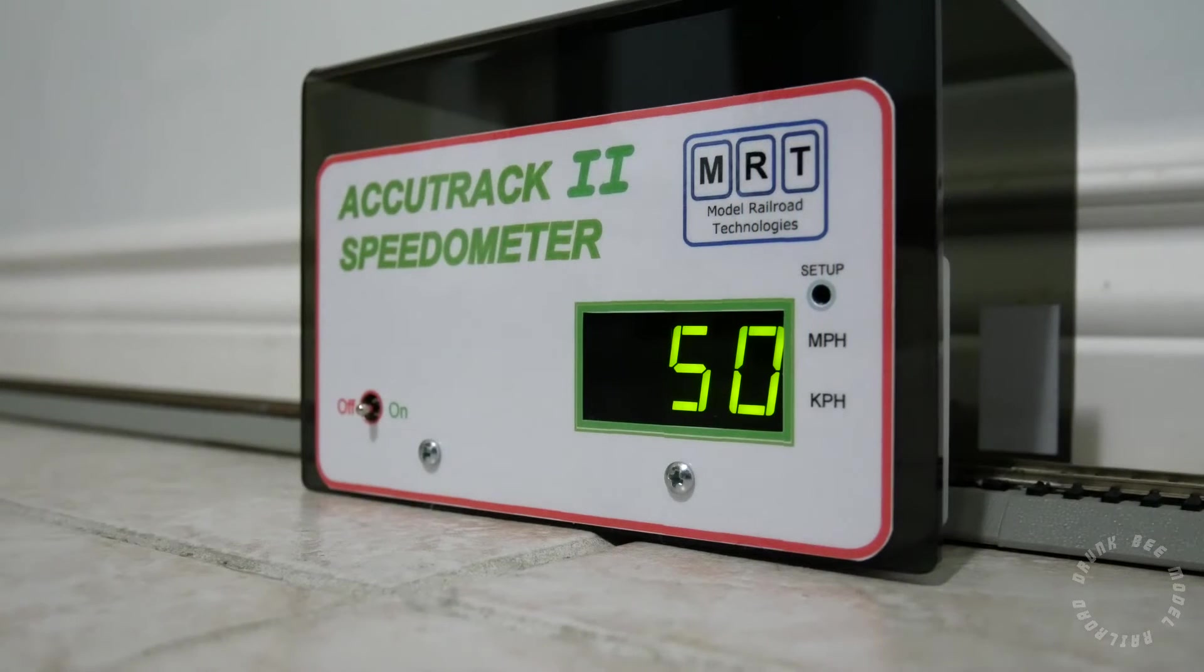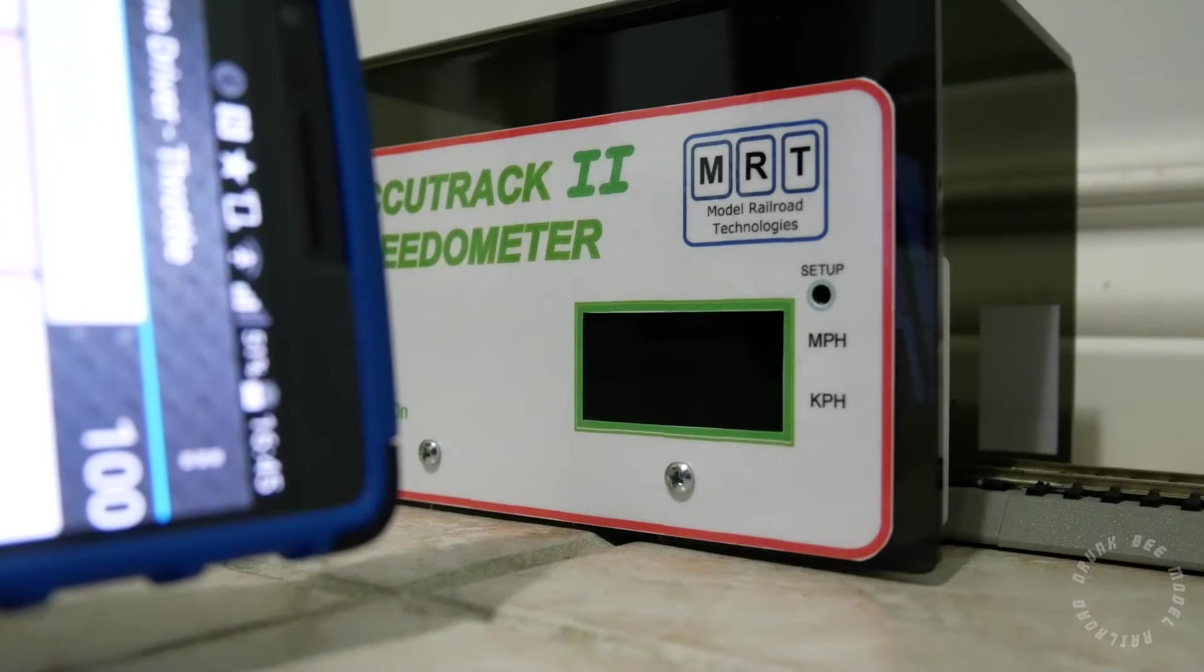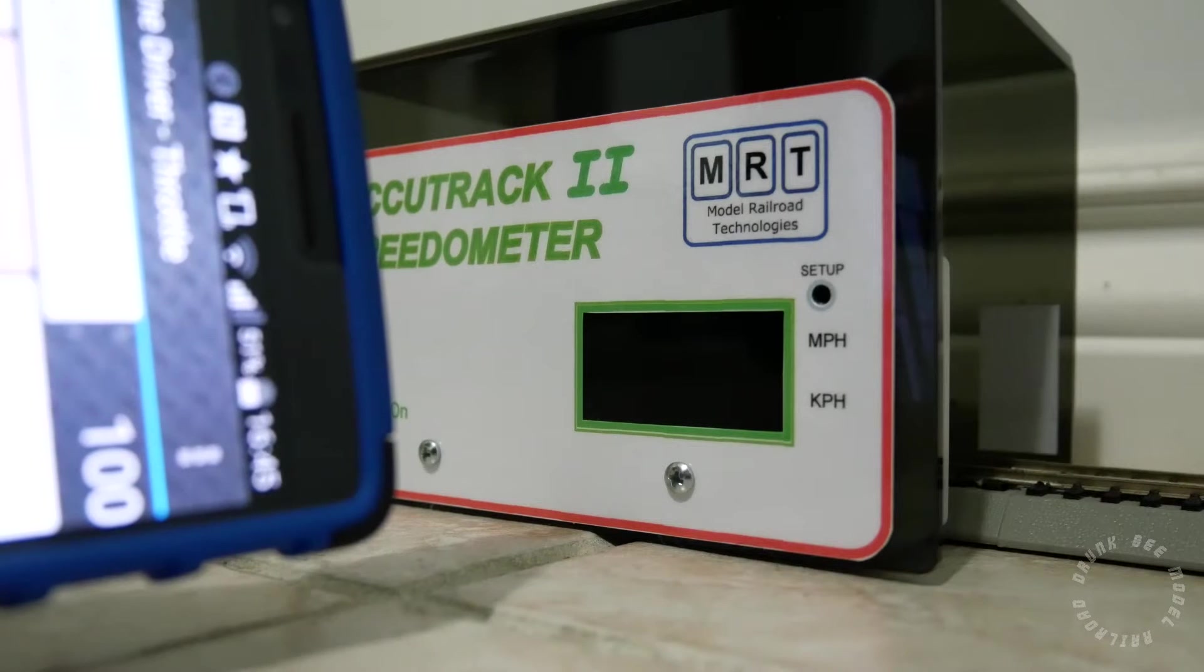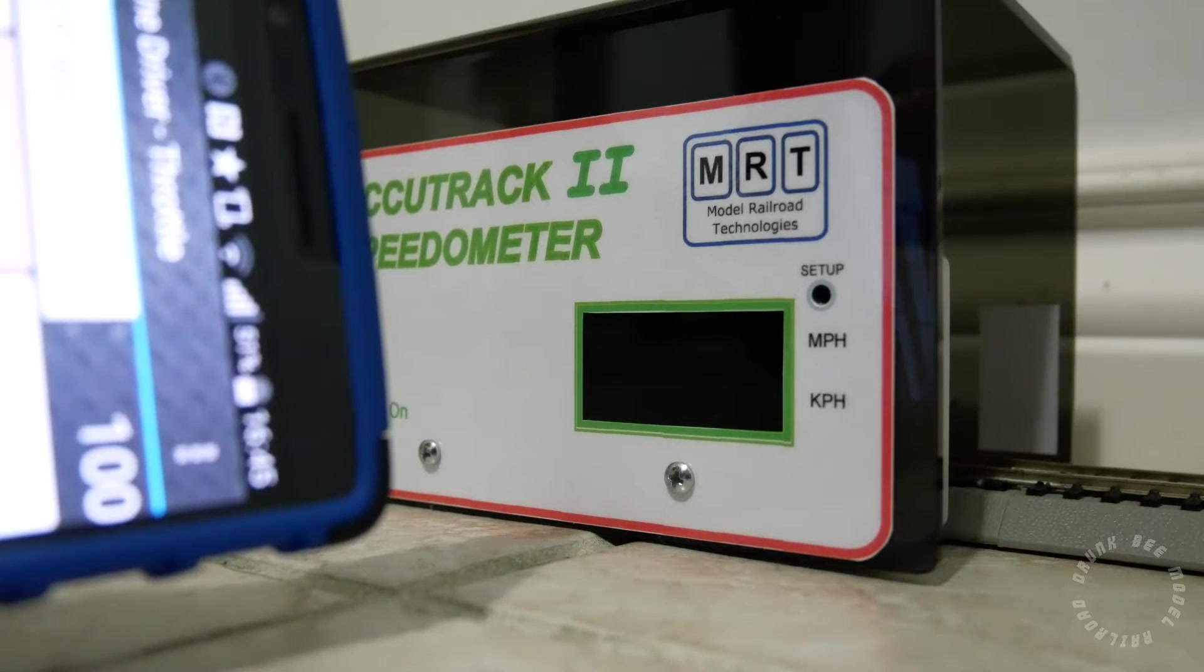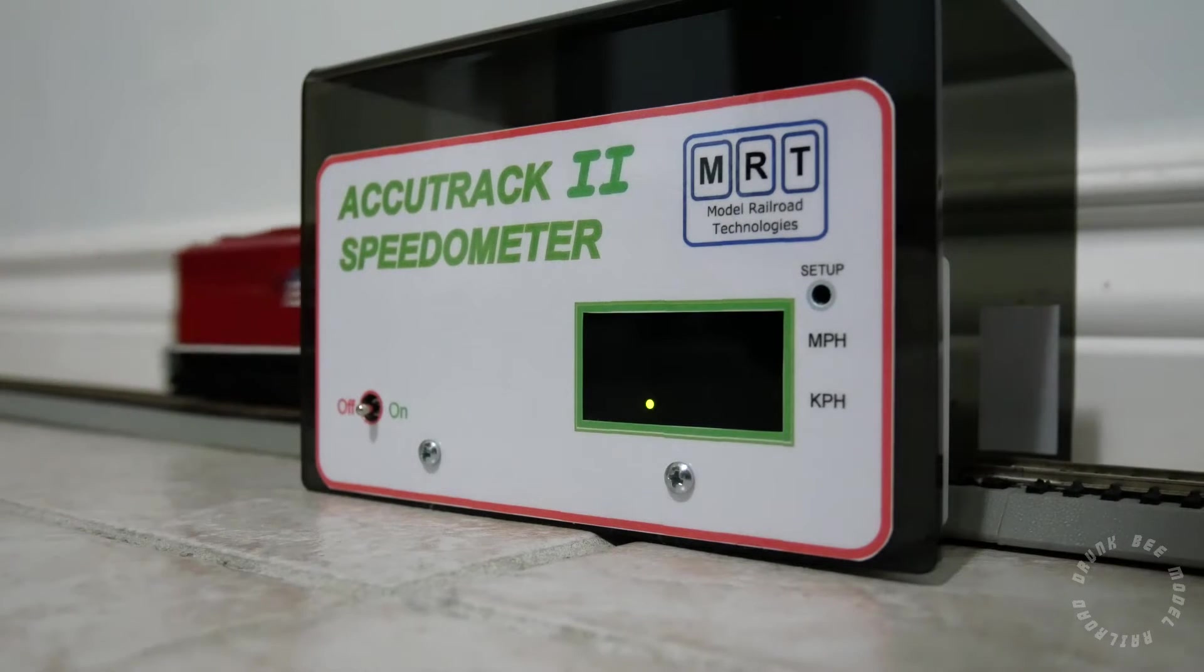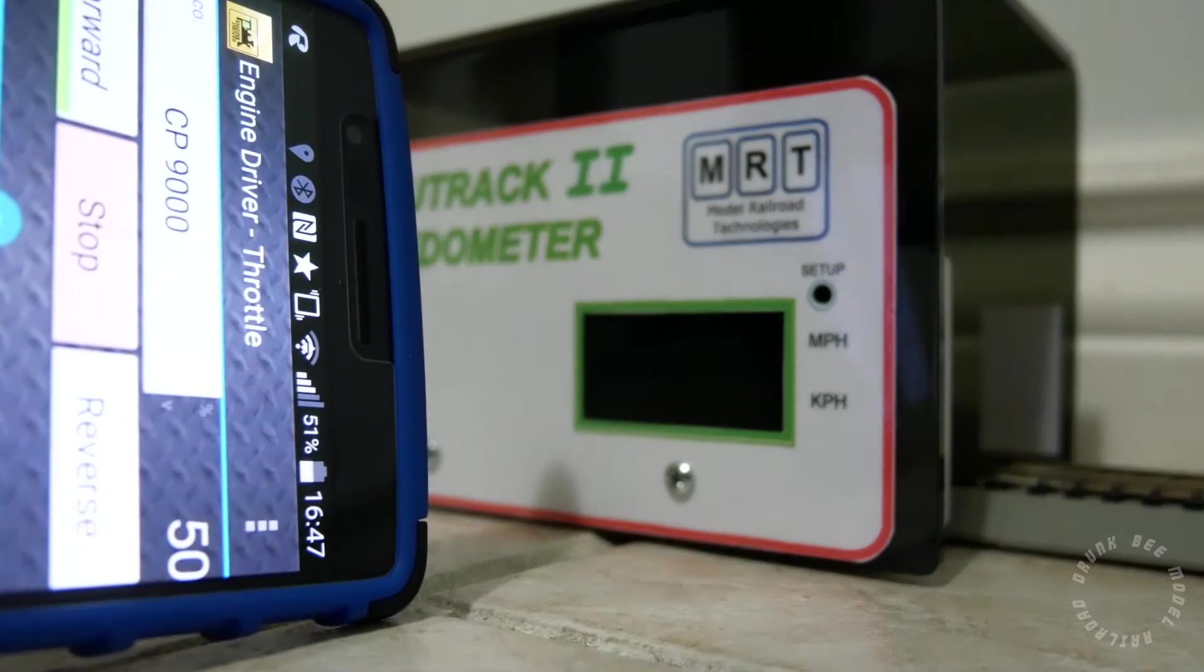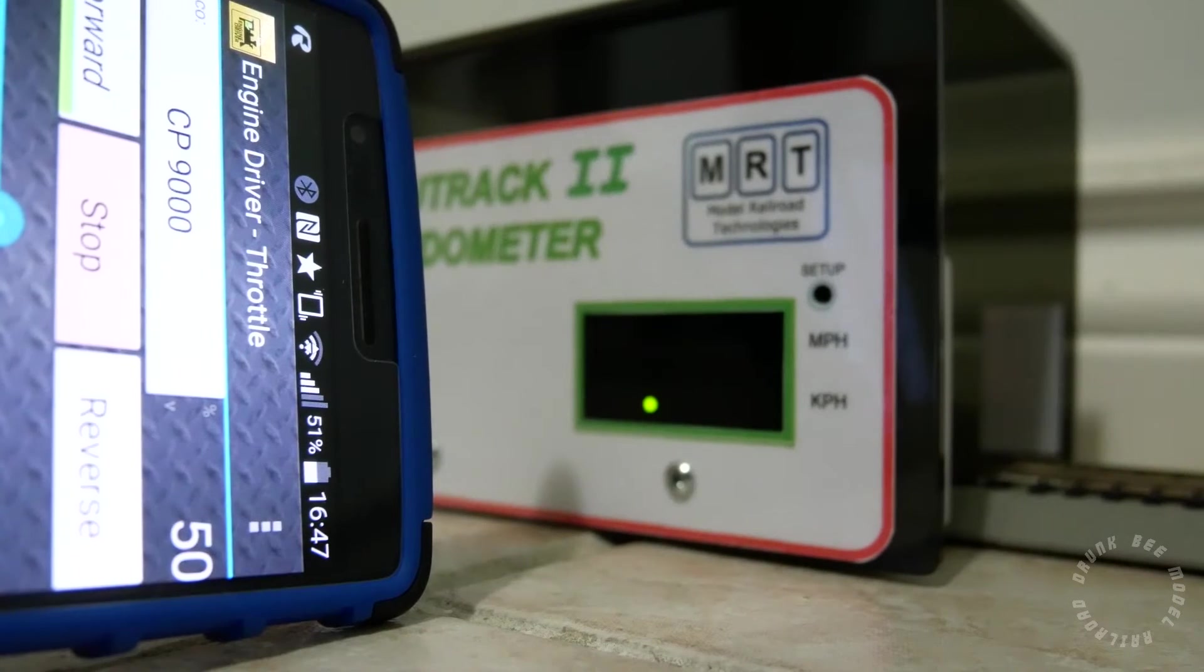I am going to use this Bowser SD40-2F as an example. First, I am going to adjust the speed of the locomotive using just CV2, CV6, and CV5. You can see that the locomotive does run at 50 scale miles per hour at 100% throttle, but as I dial the throttle down, the speed of the locomotive falls way below than what it should be. At 50% throttle, it only runs at 20 scale miles per hour.